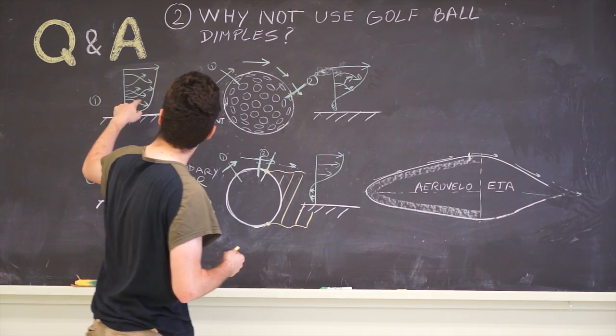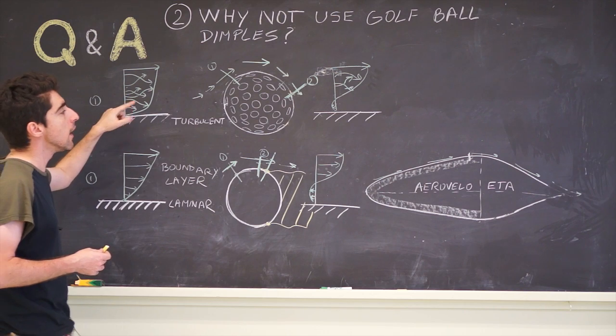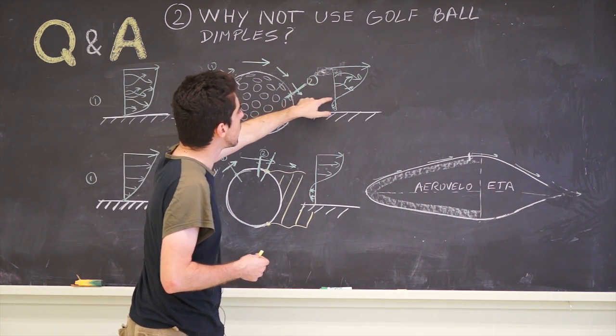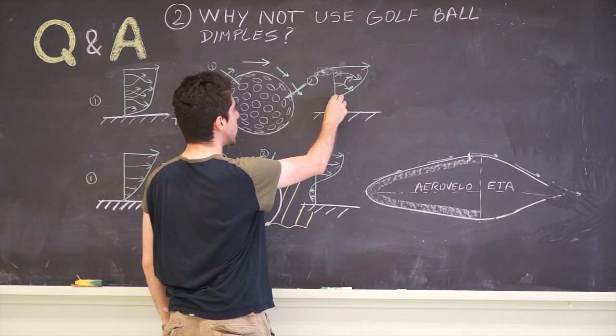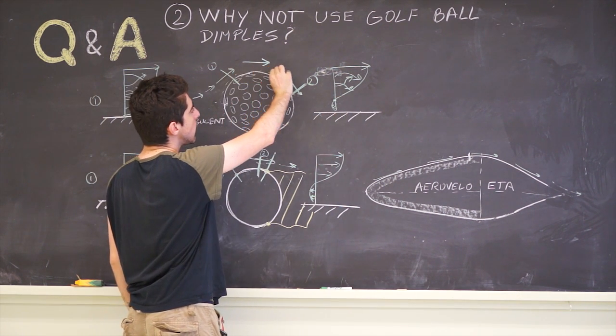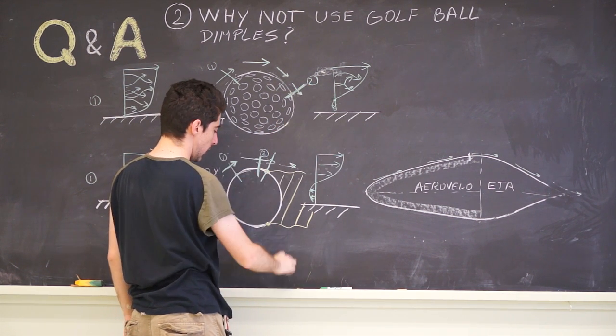However, this boundary layer has a much higher velocity, closer to the surface. That means if we slow it down, in order to get this point where the air starts traveling backwards, which we call the inflection point, we have to go a lot further down the object. Let's say down to here, instead of here.